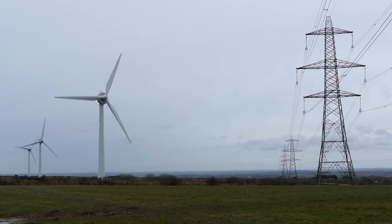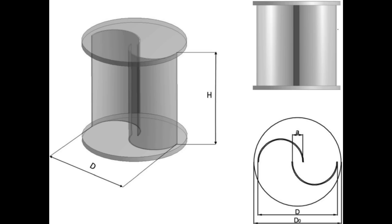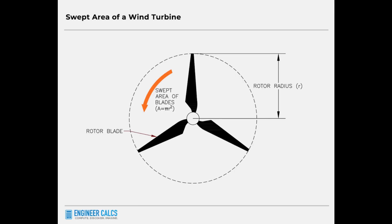There are two types of turbine: a HAWT and a VAWT. A HAWT is like a massive circle and a VAWT is like a massive square, so the area of a square is height times depth and the area of a circle is pi r squared. That gives us area, but what we need is volume.